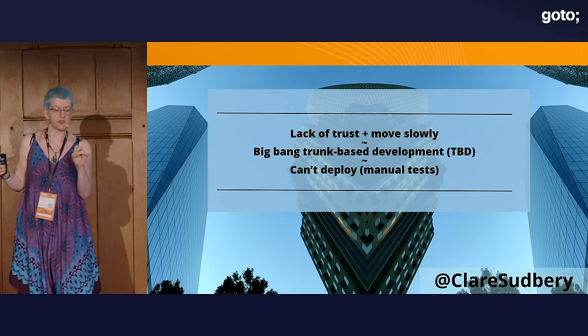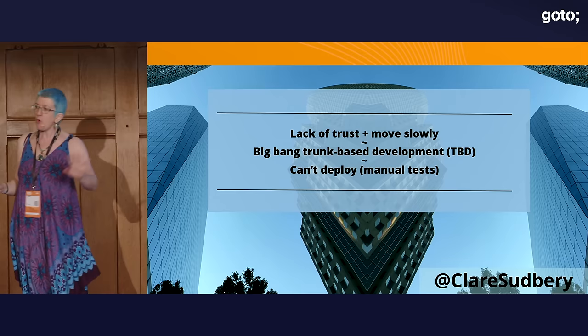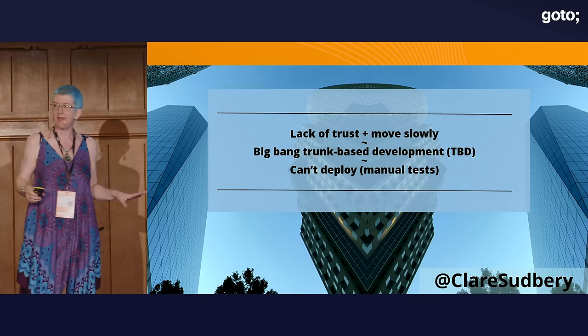Going back to the fictional scenario: they had more PRs, which increased the lack of trust, which meant they were moving even more slowly. They spot this and think: trunk-based development is where it's at. We've worked out, having read Dave Farley's article, that we can do continuous compliance — we don't have to have PRs. So: trunk-based development.